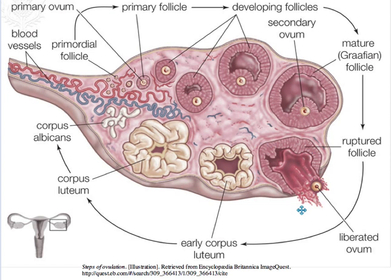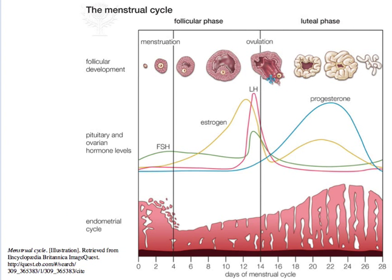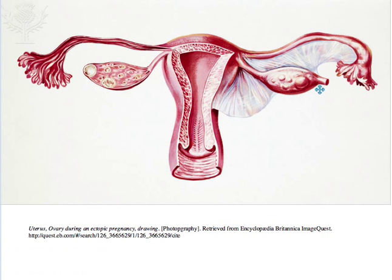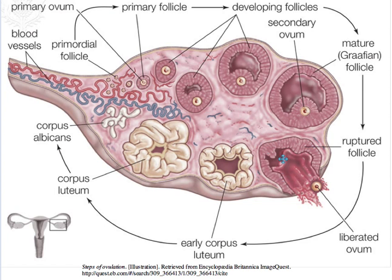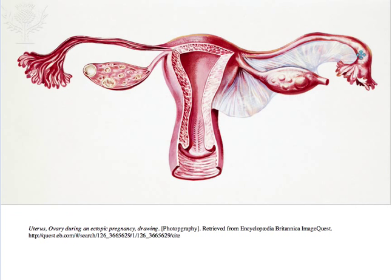At this point, the critical event of ovulation is triggered and the female gamete is passed out of the ovary, making its way via the oviduct into the fallopian tube. As the cycle proceeds, the endometrium continues to increase in thickness, the Graafian follicle is now termed a corpus luteum, and the stage is set for possible fertilization and successful implantation.